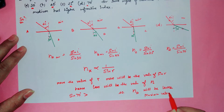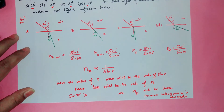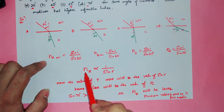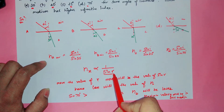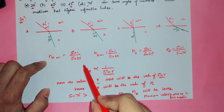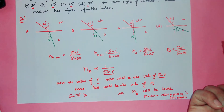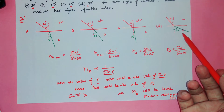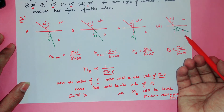In summary: more the angle of refraction, more the value of sine R, less the refractive index, and more will be the velocity of light — because it will be the rarer medium.